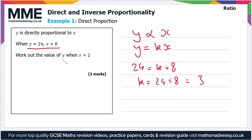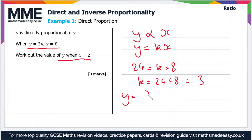Now all we have to do is substitute in x equals 2 and k equals 3 into the equation to work out the value of y. So y equals k, which is 3, times x, which is 2 — so y equals 6 when x equals 2.